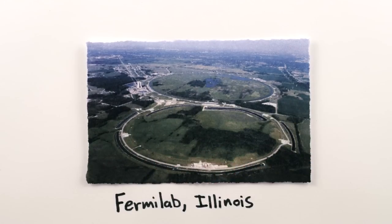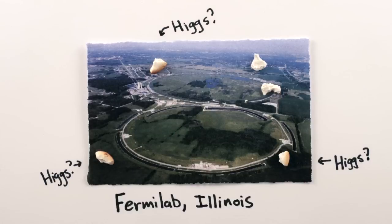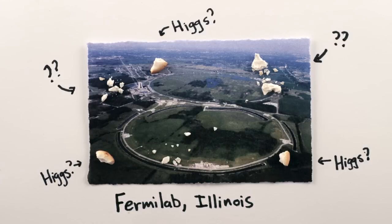There were earlier accelerators that had enough energy to create Higgs bosons in principle, but they couldn't actually do enough collisions to be confident they were actually seeing a Higgs boson, and not just an assortment of crumbs that looks by chance like it's from a Higgs boson.